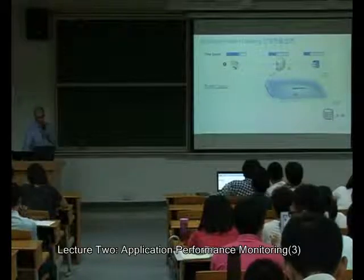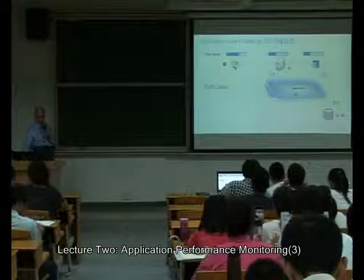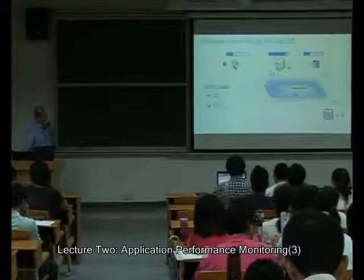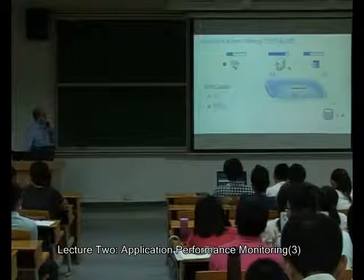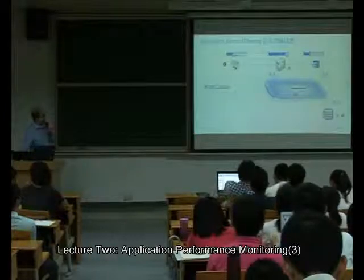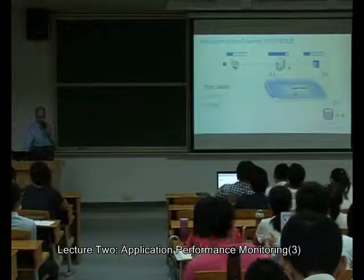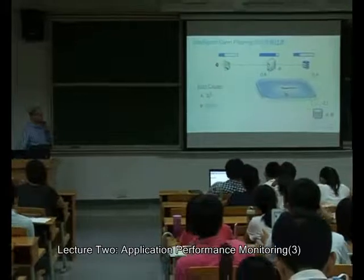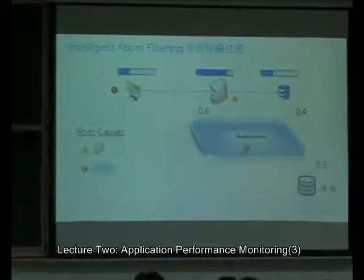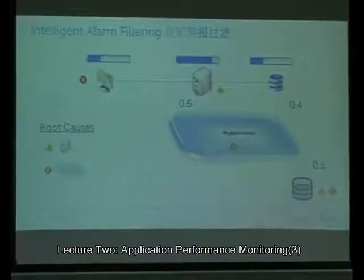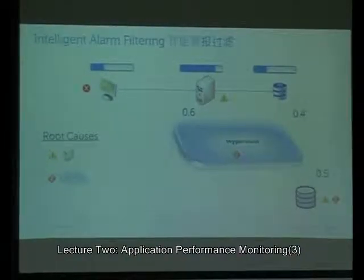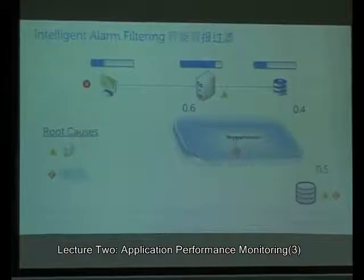The way this system works is it looks at the time first. When the time changes — we see this time went up, this alarm is there, and the correlation is strong — so that one is a root cause. Then time goes up again and the values change. Now it's more connected to the hypervisor; that hypervisor alarm is probably causing it too. The system learns: when an alarm gets triggered, it will update the values based on whether there was a performance problem while that alarm happened, based on the response time. The system constantly reevaluates itself and updates these network connections.